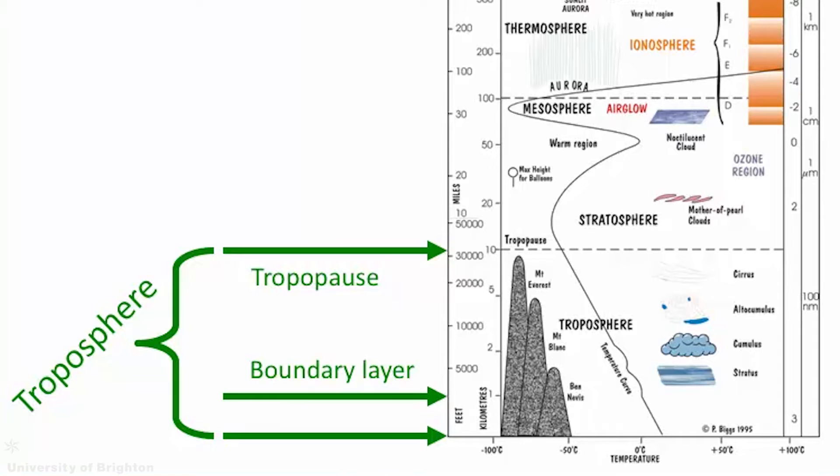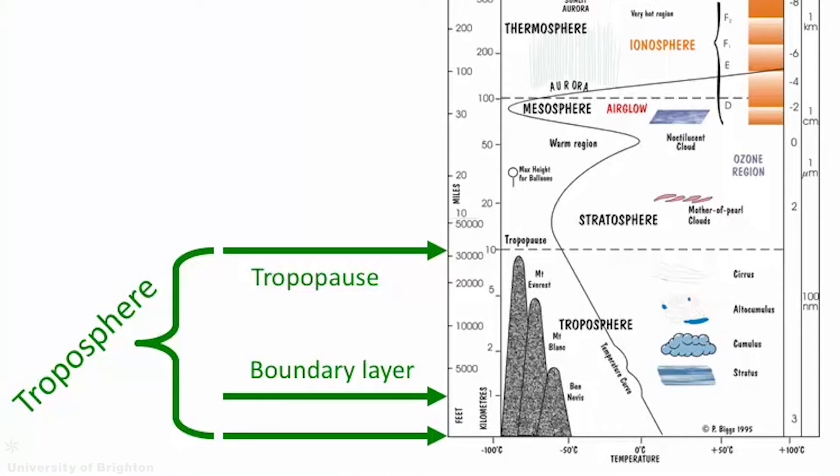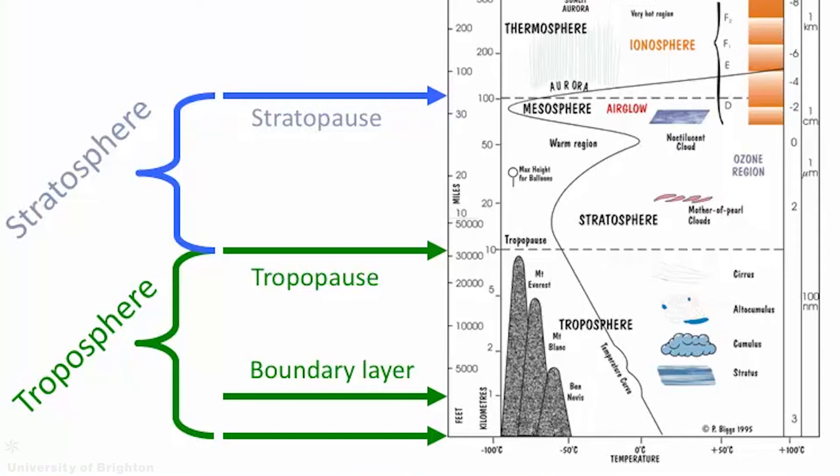Above the troposphere, we find the stratosphere, which is characterised by an increasing temperature profile with altitude. This increase in temperature comes as a result of the ozone layer, a thick band of ozone gas between roughly 15 and 30 kilometres up, which absorbs the sun's ultraviolet radiation, ultimately emitting heat and in turn protecting life at the surface.